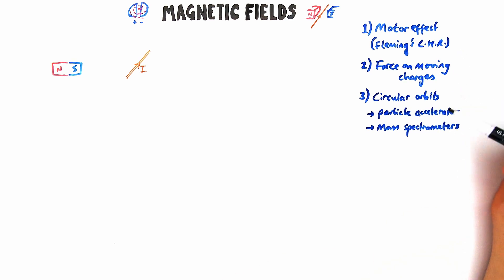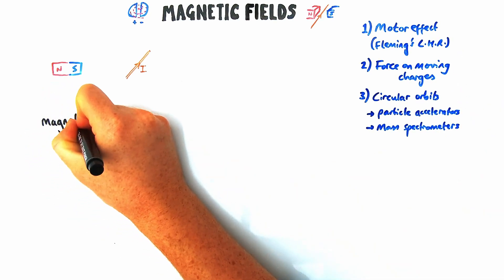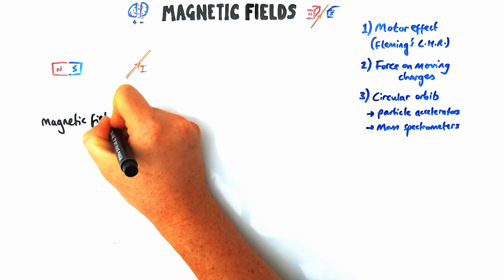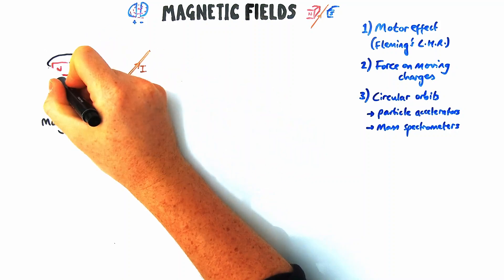In today's video we're going to look at magnetic fields at A-level, in particular how they explain the motor effect and move on to particle accelerators.